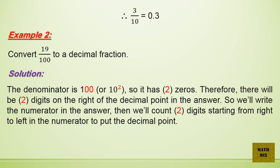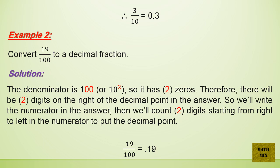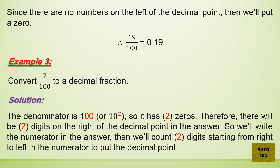Example 2: Convert 19 over 100 to a decimal fraction. The denominator is 100, or 10 squared, so it has two zeros. Therefore, there will be two digits on the right of the decimal point in the answer. We write the numerator, then count two digits from right to left to place the decimal point. Since there are no numbers on the left of the decimal point, we put a 0. Therefore, 19 over 100 equals 0.19.